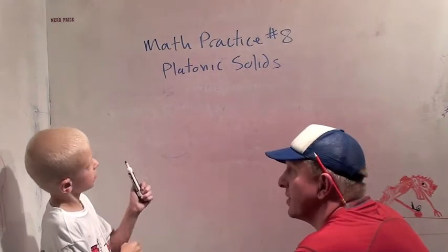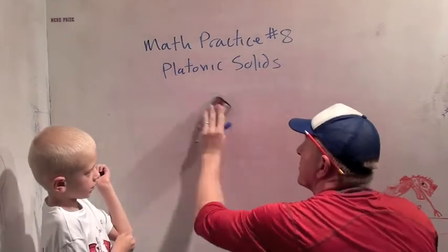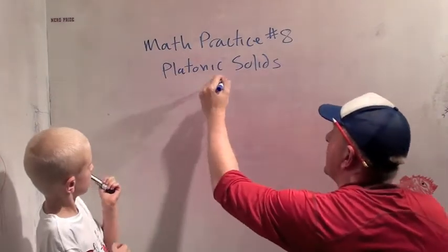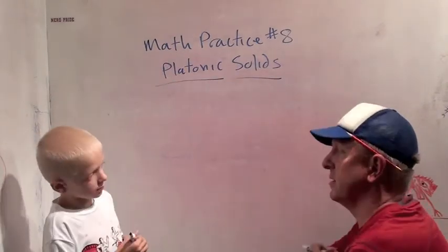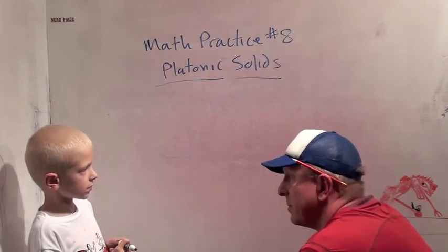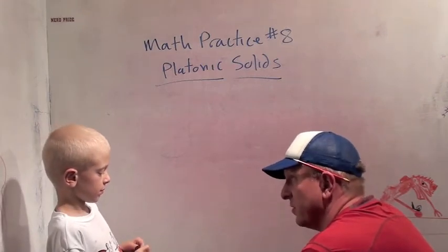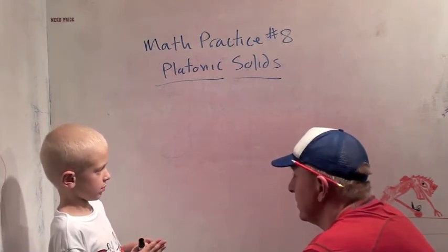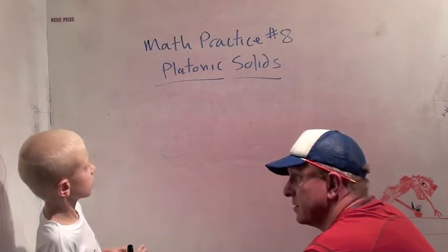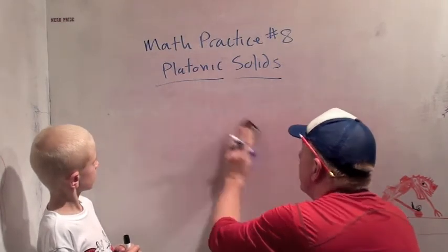You want to talk about 3D shapes, right? Okay, well, there's five really famous 3D shapes, and they're called the platonic solids. And they've been known for more than 2,000 years, maybe even 4,000 years. They were known in ancient Greece. You've learned about ancient Greece, right? Yeah. They really liked geometry back then. Did you know that? No.